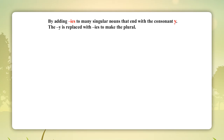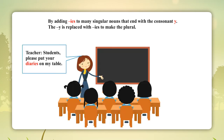By adding 'ies' to many singular nouns that end with a consonant and 'y' — the 'y' is replaced with 'ies' to make the plural. Teacher: 'Students, please put your diaries on my table.'